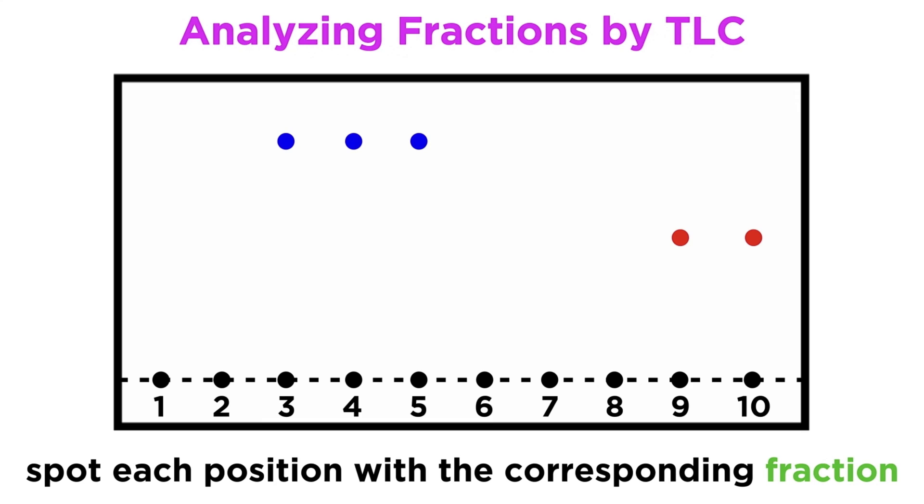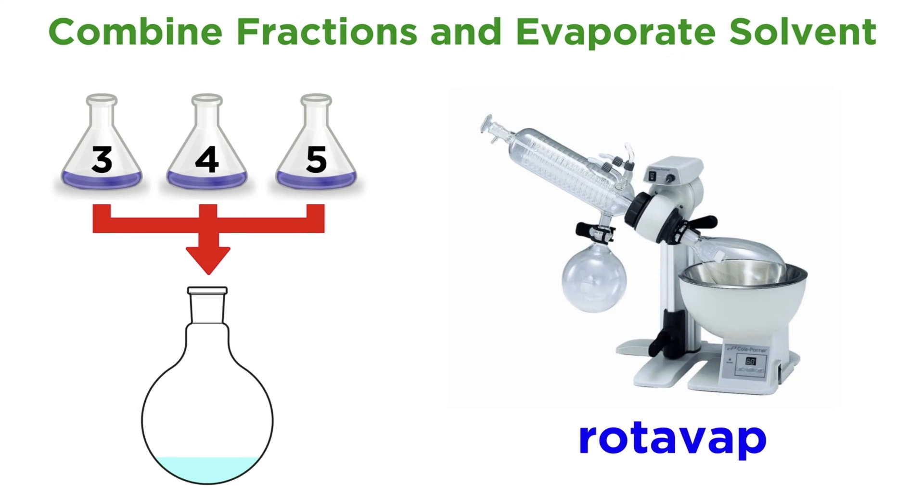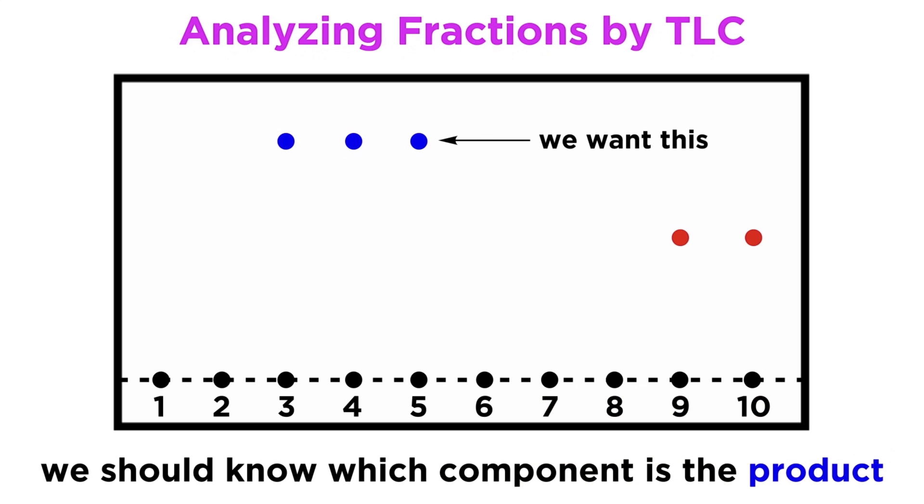When the compounds are not visible, you will have to perform TLC to find out what's in each fraction. You can test many fractions on one plate, and all the fractions that show data for a particular compound can be combined and the solvent evaporated, to give you a pure isolated product. If you know for sure which compound you want, you can dispose of the rest, but sometimes you will want to isolate two or more products.